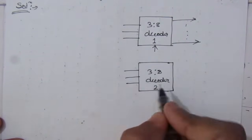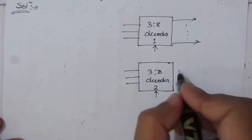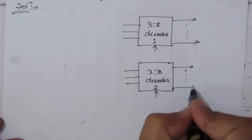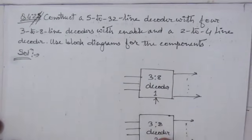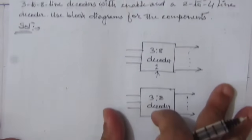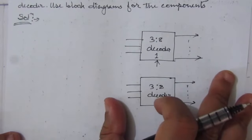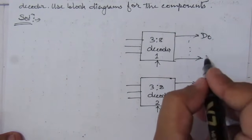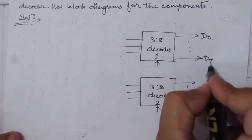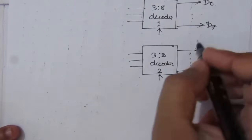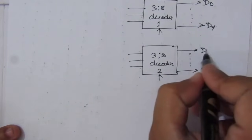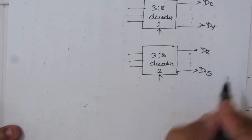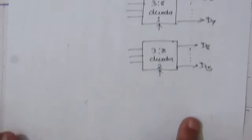Decoder 2 also has 3 input lines, 1 enable input, and its output lines. As per the question we will have 32 output lines total, so let us label them: the first decoder outputs D0 to D7, and the second decoder outputs D8 to D15.